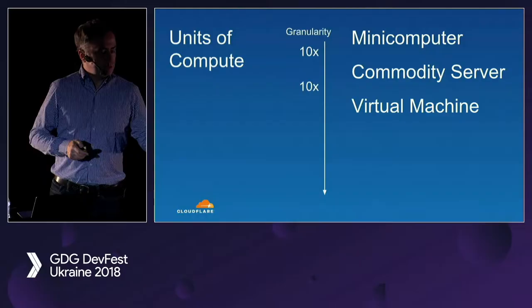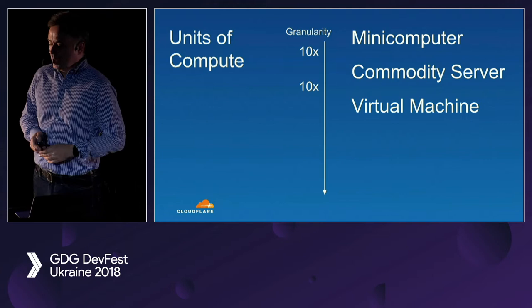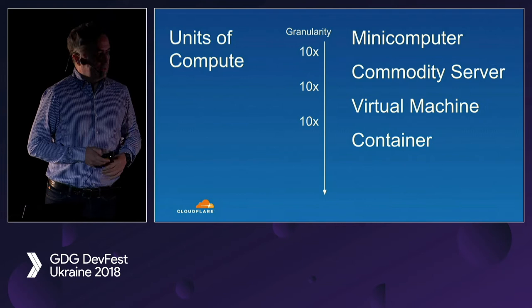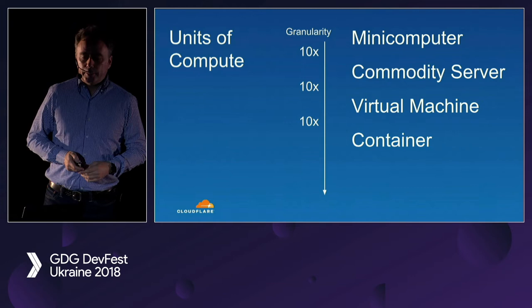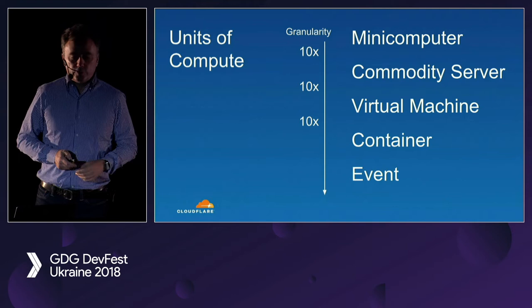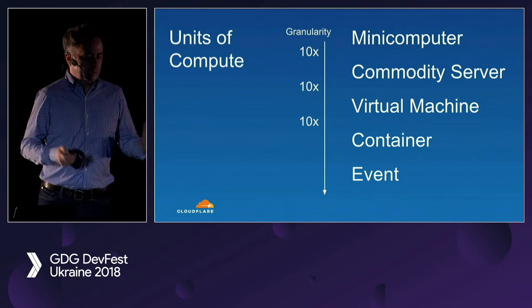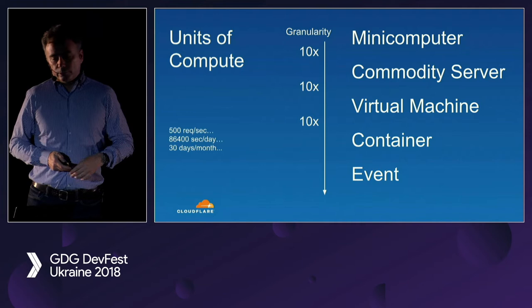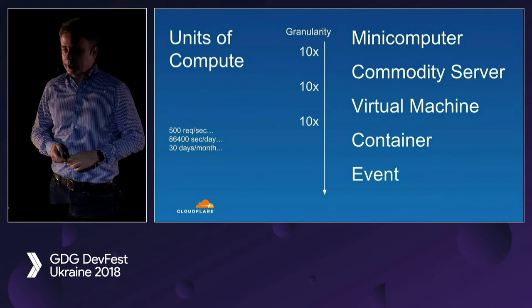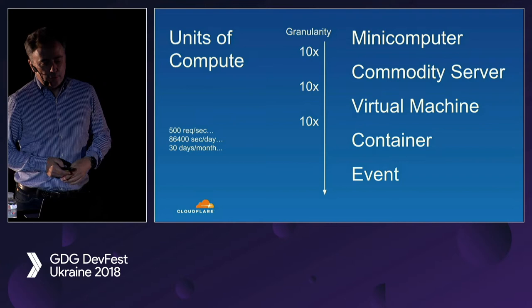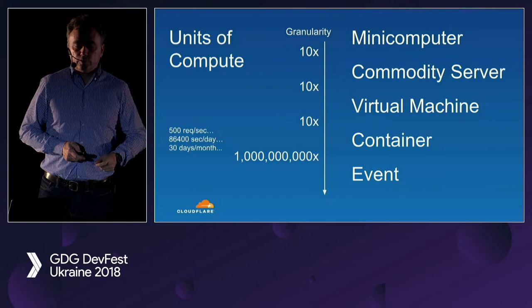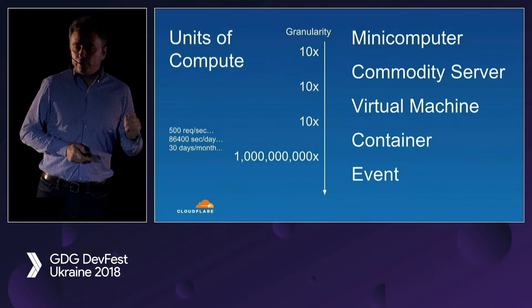Virtual machines themselves are fairly complicated to use, so containers came along and you got about another 10x units of compute — you can have a container with something in it. But now we get to serverless. What's the unit of compute of serverless? It's really an event-based thing: an event happens and some code executes. So the unit is no longer a machine, no longer a process — it's actually a single event. If you're doing 500 requests per second, every second of every day, every month, that's about a billion times more granular units of compute. This is a clear fundamental shift about serverless — very small units of computation, made possible by new technologies.